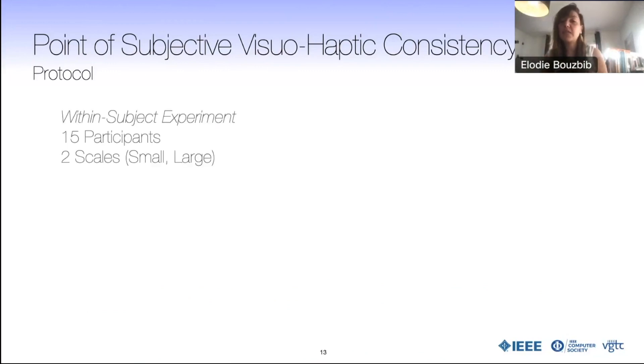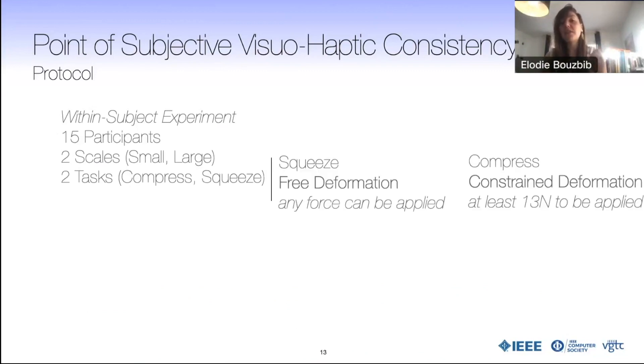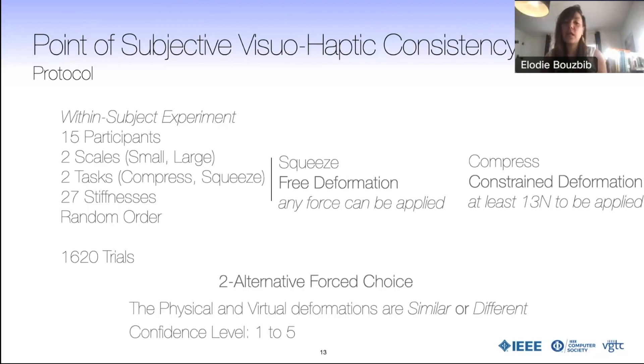We performed a wooden subject experiment with 15 participants and two scales to verify hypothesis number two and two tasks to verify hypothesis number three. We tested 27 stiffnesses in a random order for a total of 1620 trials. Participants answered a two-alternative force choice being the physical and virtual deformation are similar or different and then they filled out their confidence in their answer with a scale from 1 to 5.